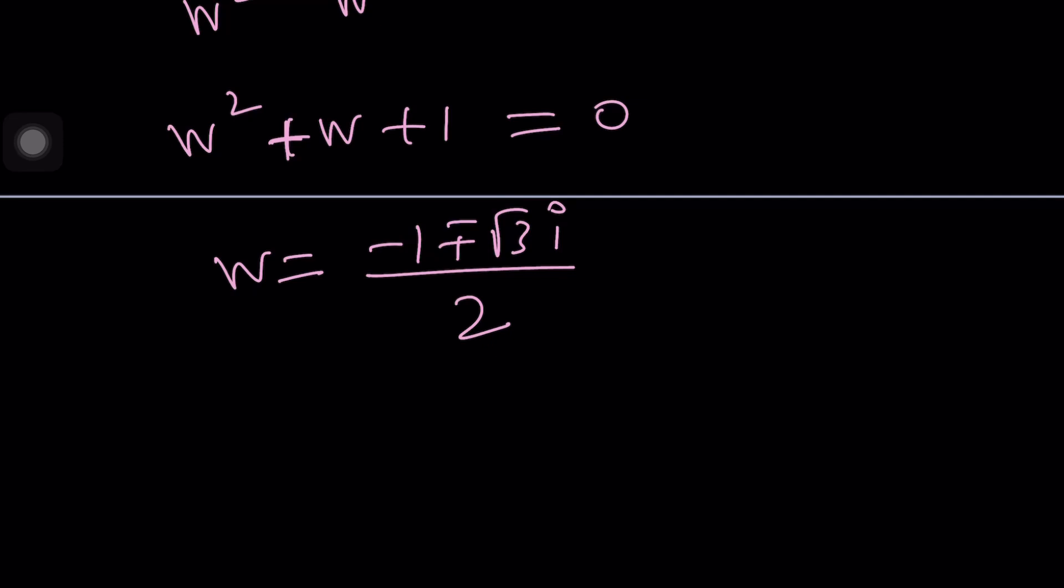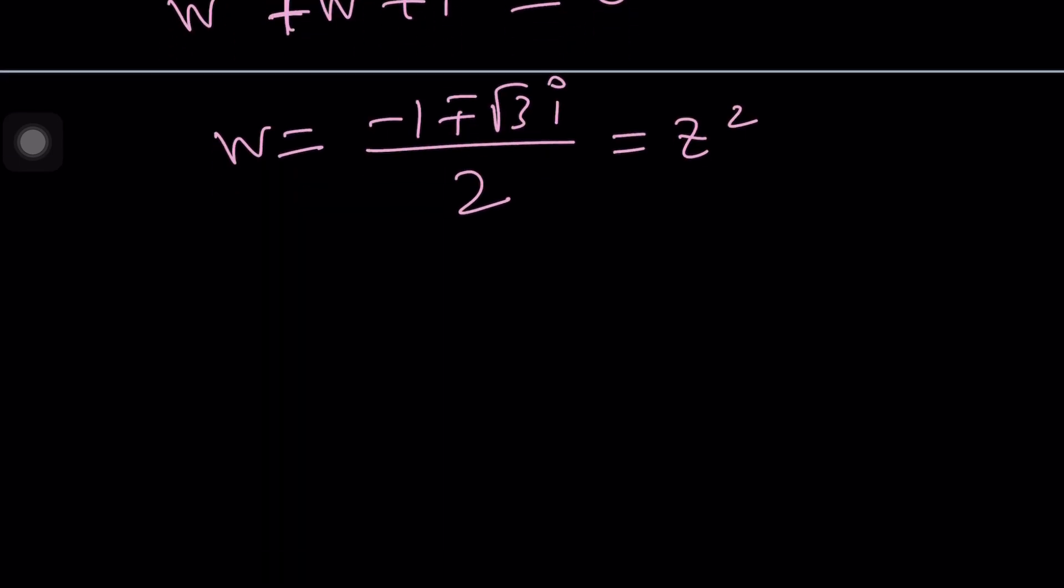What am I going to do with them? Set them equal to Z squared because W is Z squared. Remember that? Did you forget? So now we have Z squared equals, let's just take one of them first, this one.